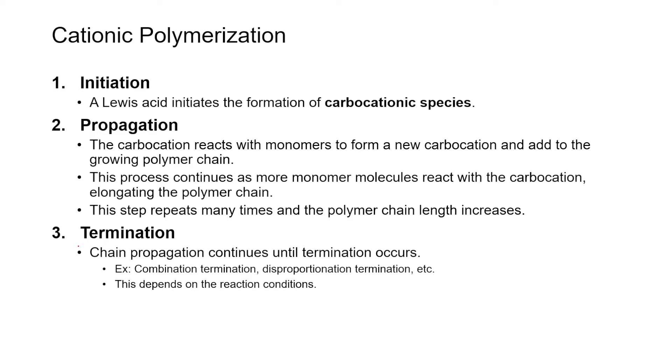So step one, the initiation step, is a Lewis acid will initiate the formation of your carbocationic species. Step two is the propagation step. Now, the carbocation will react with monomers to form a new carbocation and add to the growing polymer chain.